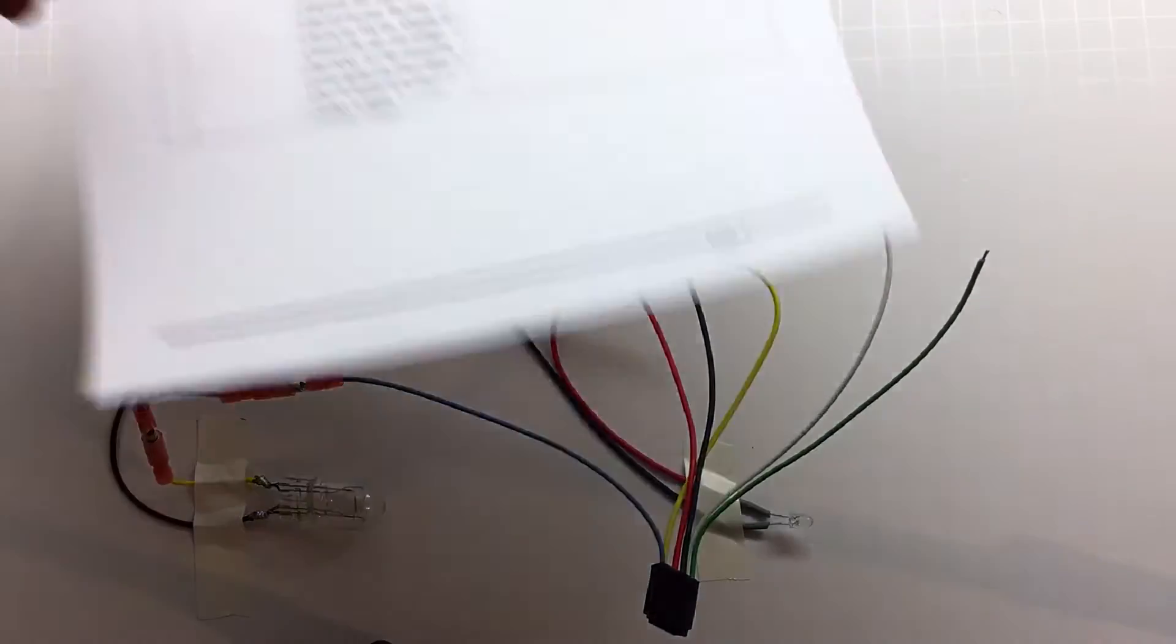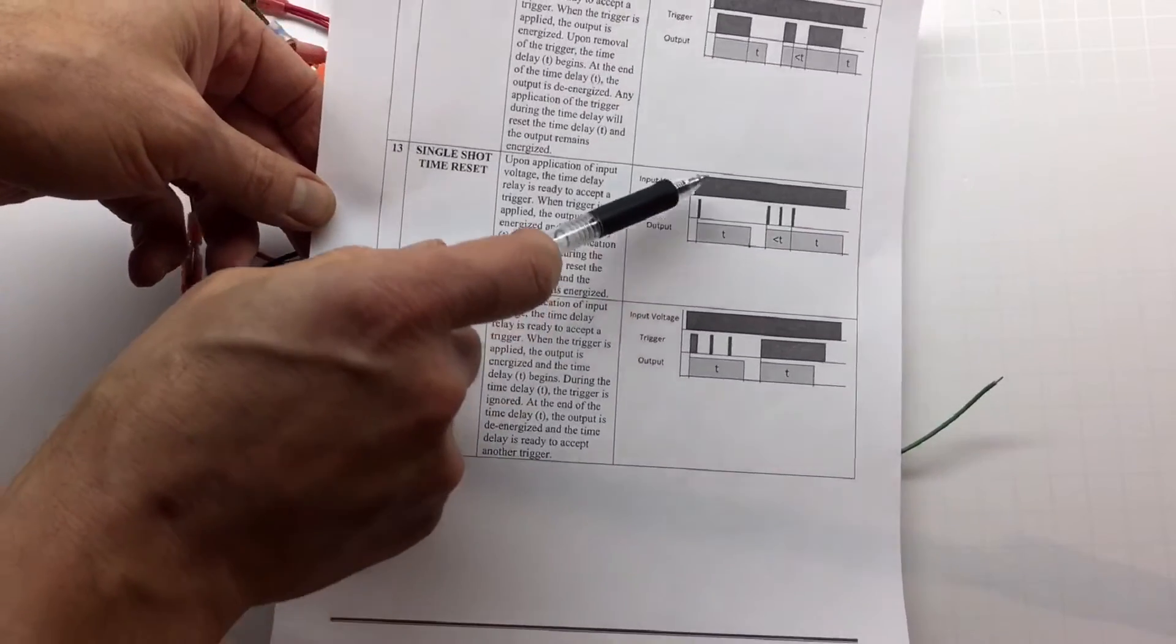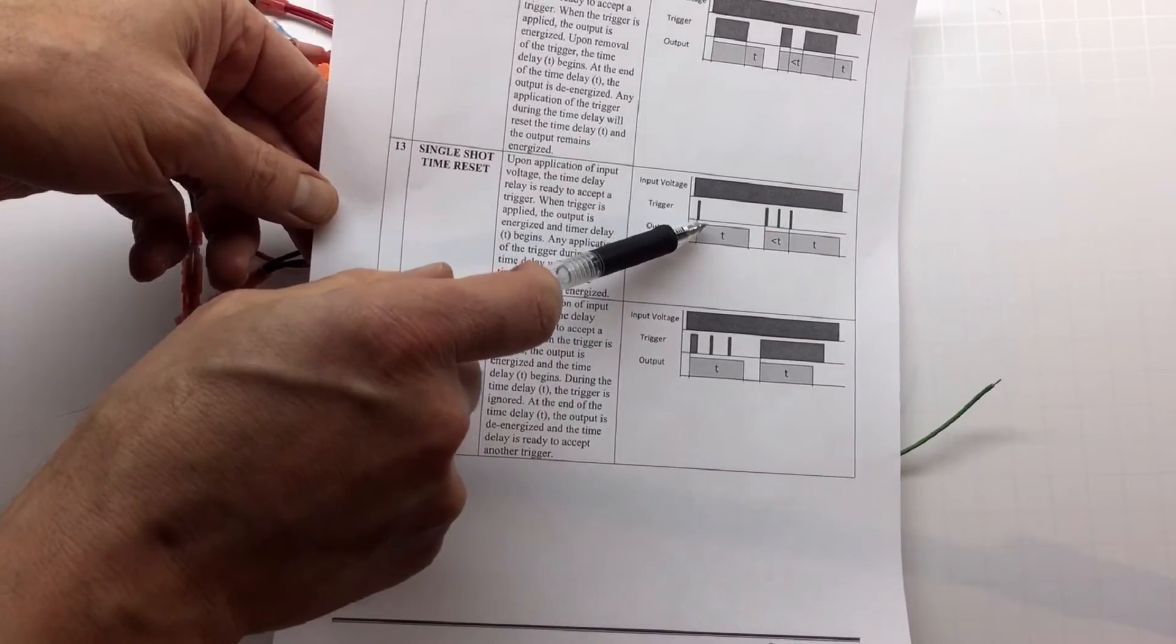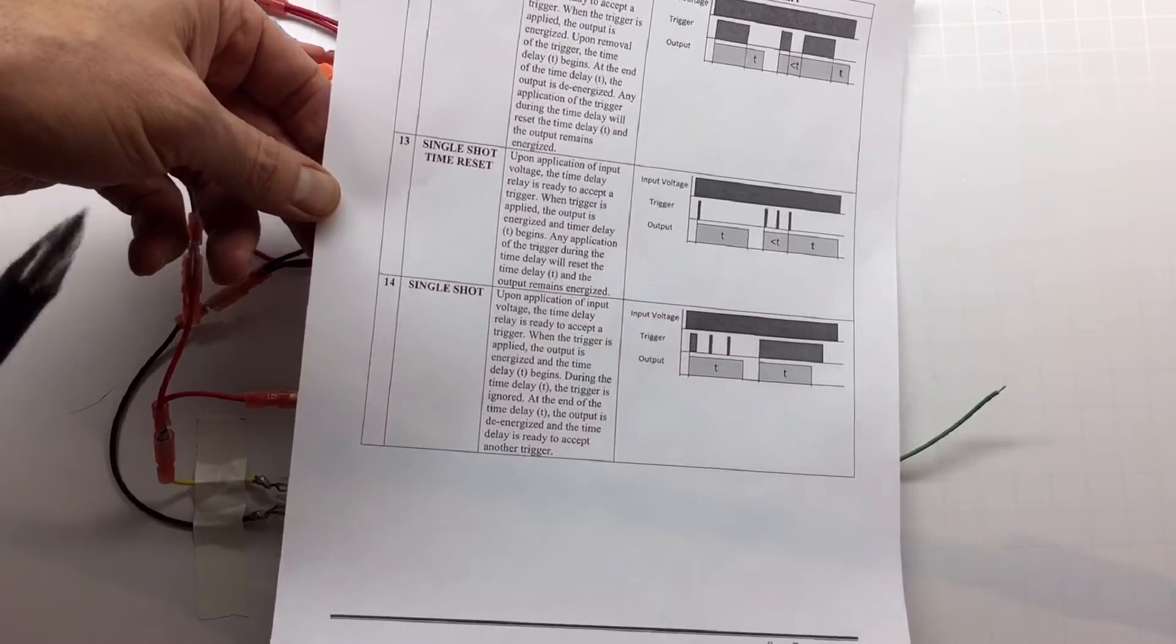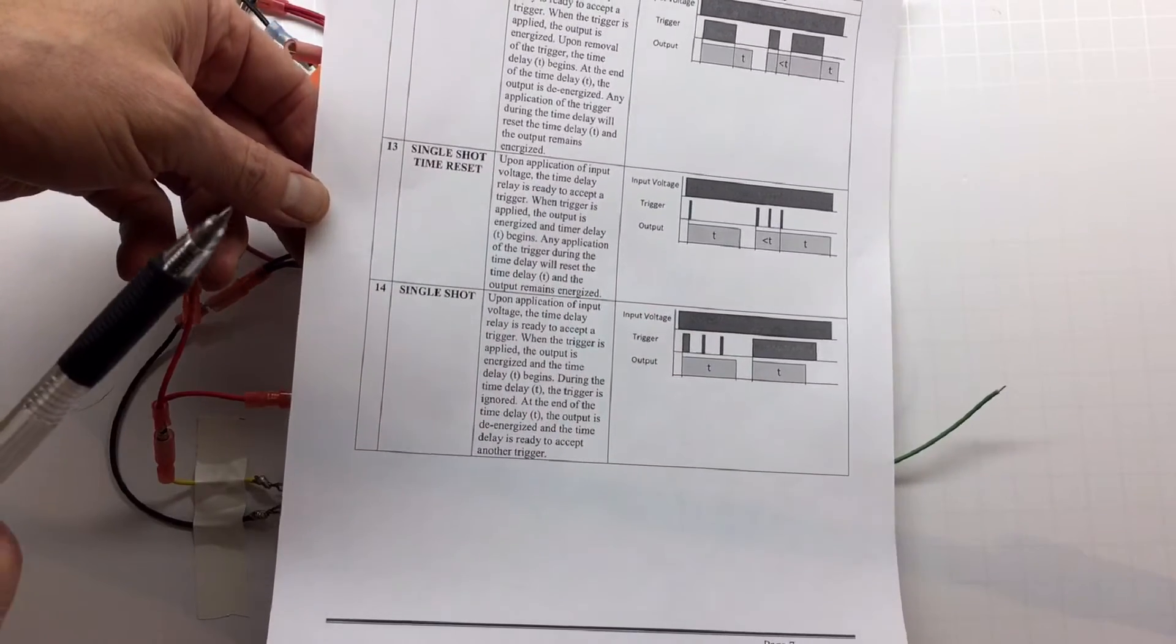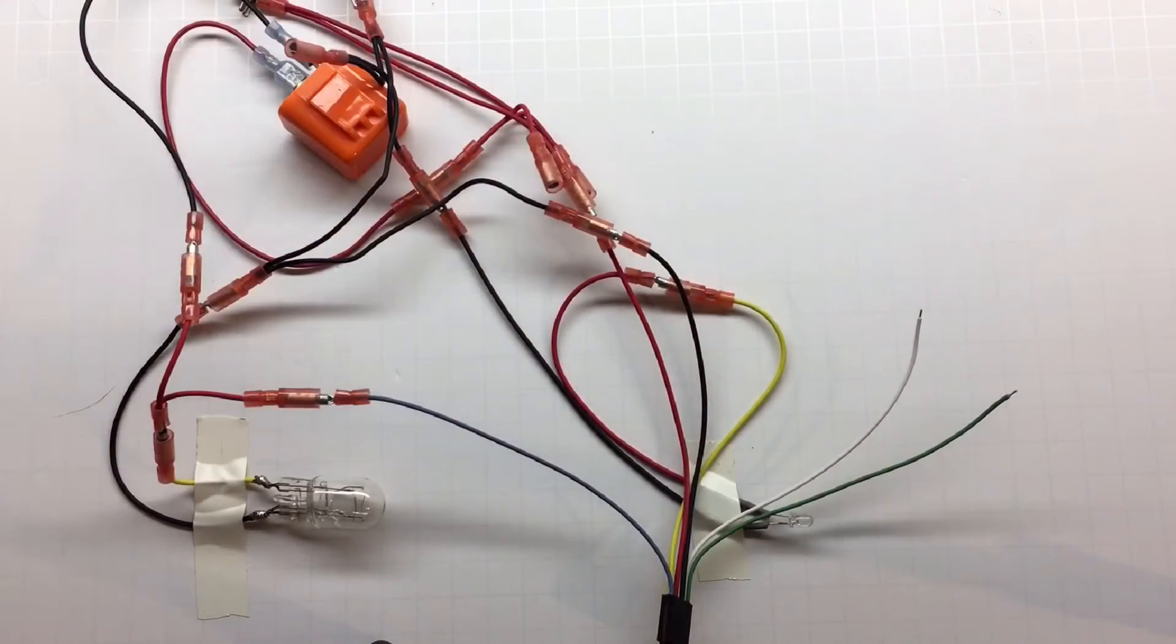So the way it's going to work, we're going to configure the timer to option 13, and when the timer sees the impulses from the turn signal, it is going to turn the light off. So we're going to configure the timer to option 13, trigger 2, and reverse output.